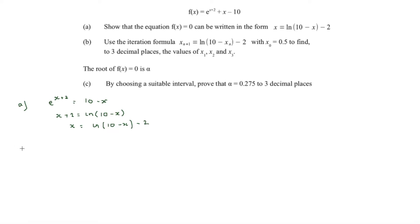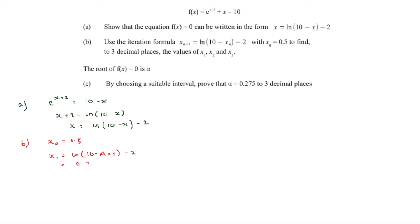Now we use this as an iteration formula, starting with x₀ = 0.5. We type 0.5 into the calculator as Ans. For x₁ we compute ln(10 - Ans) - 2, which is ln(10 - 0.5) - 2 = ln(9.5) - 2. This gives x₁ = 0.251.